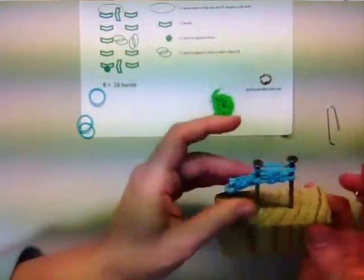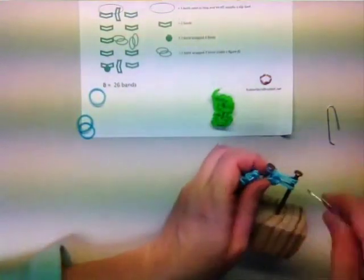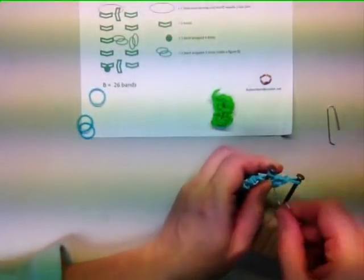Using your hook again, go through the bands, grab the bottom two bands and pull them back through the bands and up and over the nails. We can now continue our straight piece with one more stitch.